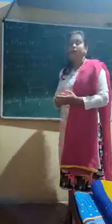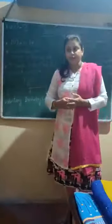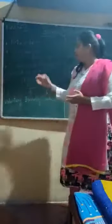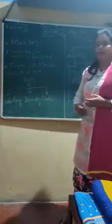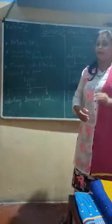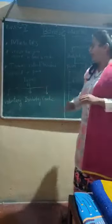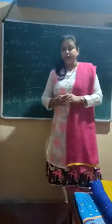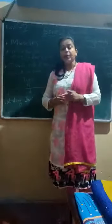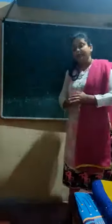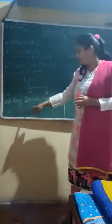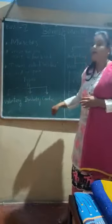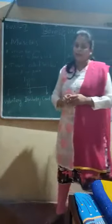That was about muscles - what they are and what exactly they do. In muscles we also have types. There are three types of muscles: voluntary muscle, involuntary muscle, and cardiac muscle.